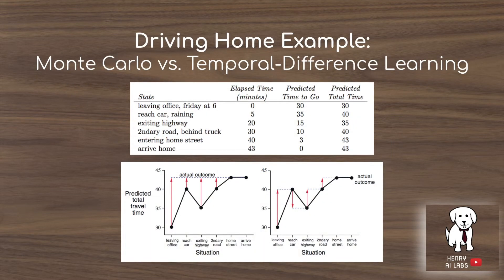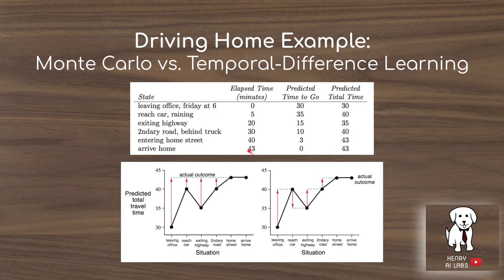The differences between Monte Carlo and temporal difference learning are motivated through a driving home example. We imagine leaving the office and predicting how long it takes to get home, making predictions at intermediate states along the journey. In Monte Carlo learning, all intermediate predictions are set to the final G sub T achieved at episode end — say, 43 minutes. In temporal difference learning, bootstrapping updates intermediate predictions so that, for example, not getting stuck behind a truck would more correctly update the value estimates, whereas Monte Carlo can't distinguish these nuances of intermediate states.